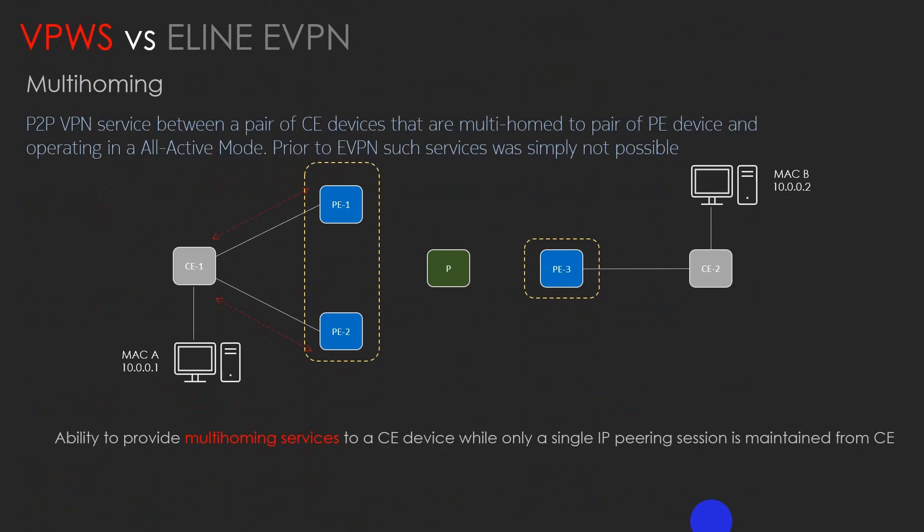VPWS, which is a layer 2 VPN, versus E-line EVPN, which is a point-to-point layer 2 service provided by EVPN. Point-to-point VPN services between a pair of CE devices that are multi-homed to a pair of PEs operating in all-active multi-homing were not possible prior to EVPN. The VPWS service is point-to-point with single homing only, not multi-homing, which EVPN now provides.